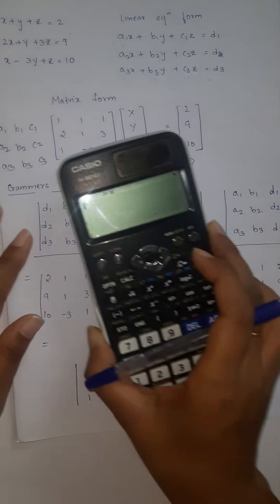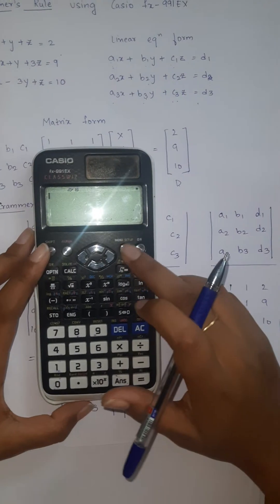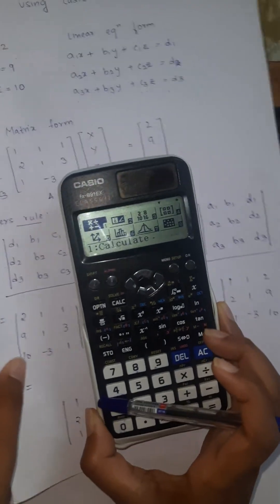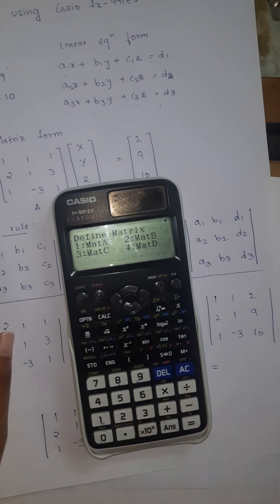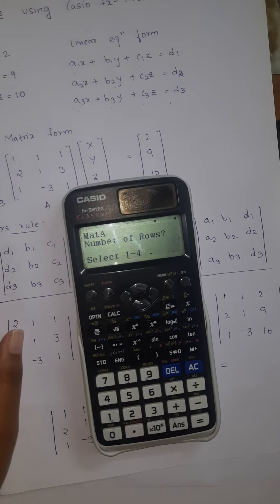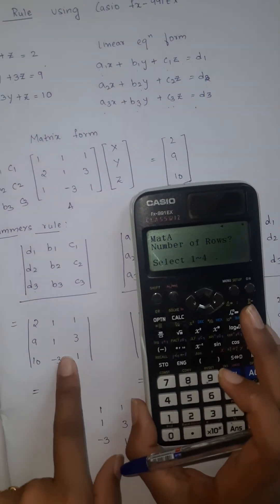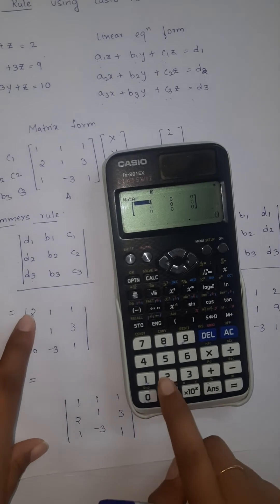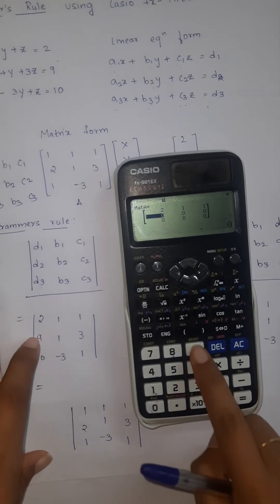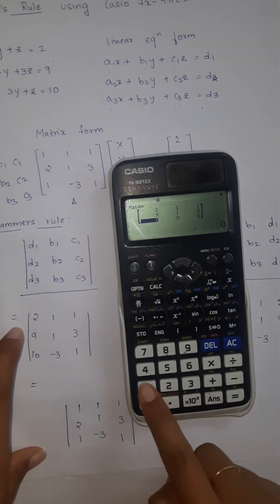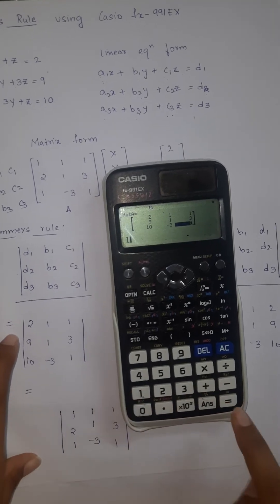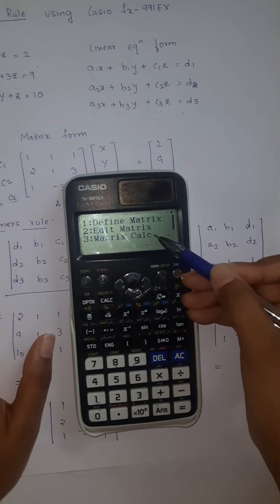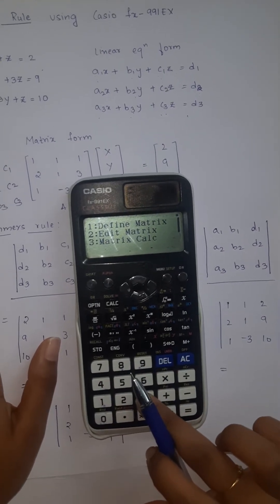Now we need to find the determinant. Menu setup, this is the fourth option matrix form always. We are defining matrix one. The number of rows and columns are 3. This is a 3 by 3 matrix. Now we have to define the matrix. It is 2 equals 1 equals 1 equals 9 equals 1 equals 3 equals 10 equals minus 3 equals 1. We defined the matrix.